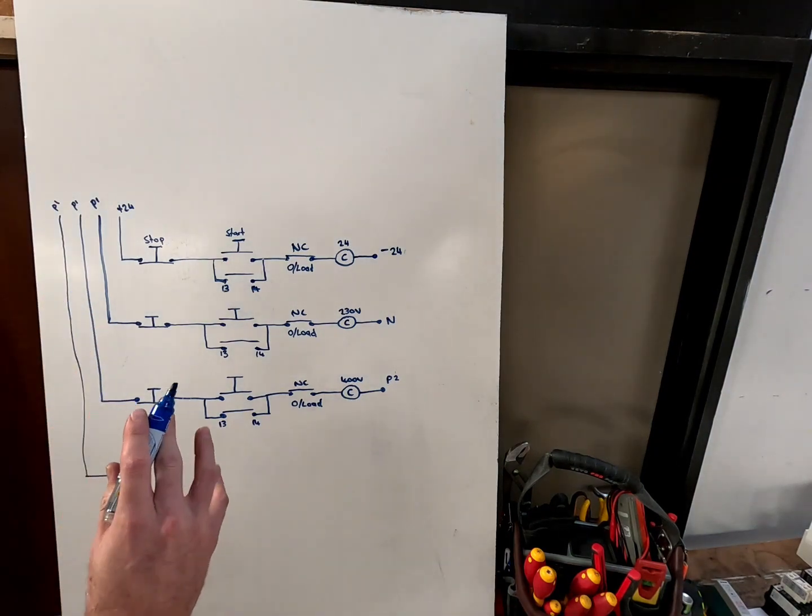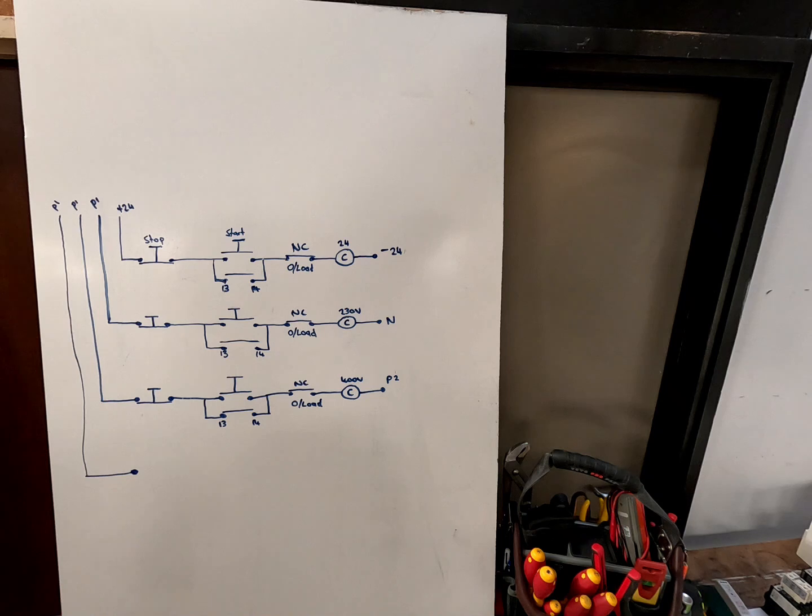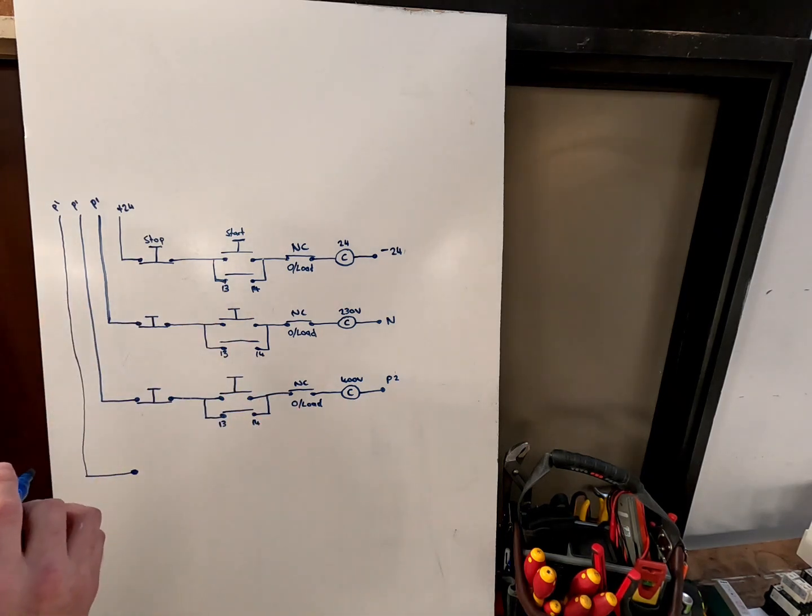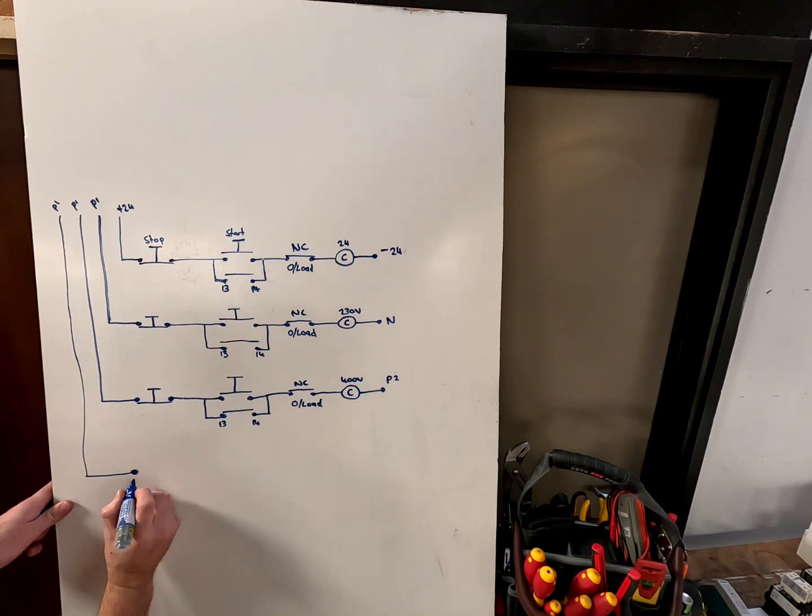So I've drawn those three standard contactors, now I'm going to draw the reversing contactor. A little bit different, same sort of principles. So we're going to start with the stop button.